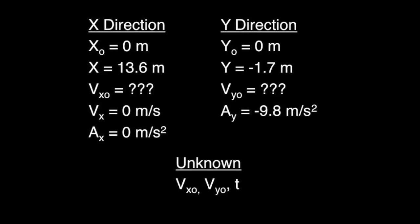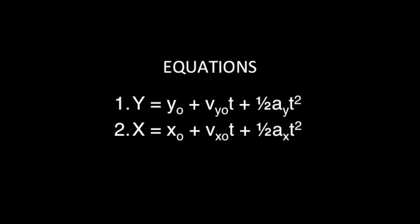Our unknowns are the initial velocity in the x and y direction and the total time. These are the two main kinematics equations that we use.